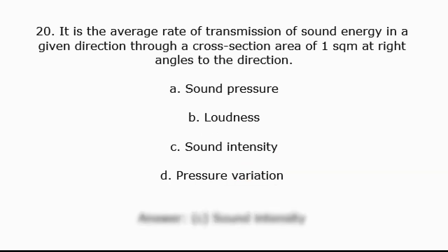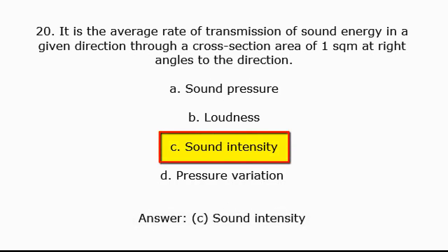Question 20: It is the average rate of transmission of sound energy in a given direction through a cross-sectional area of 1 square meter at right angles to the direction. A. Sound pressure, B. Loudness, C. Sound intensity, D. Pressure variation. Answer: C. Sound intensity.